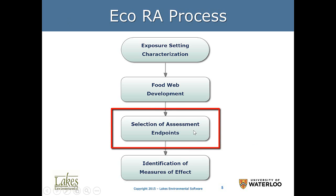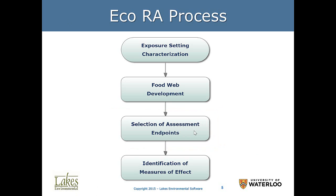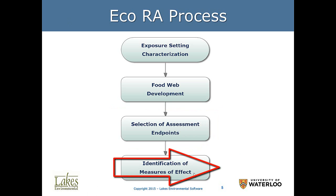Then we need to select assessment endpoints — what is the endpoint that will cause an impact in that ecological system — and we identify measures of effect. Our identification will be very similar to the human health hazard quotient. It will be a ratio, and if it goes above a certain level, then there is a measure of effect indicating a real negative impact.